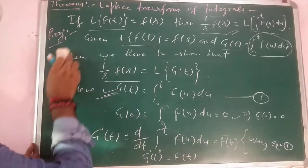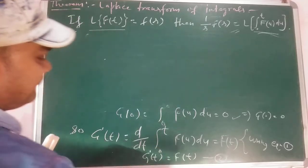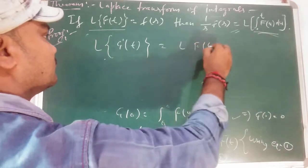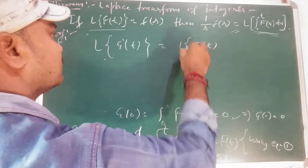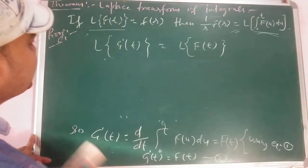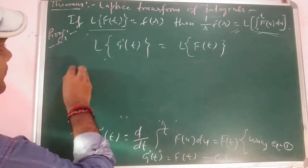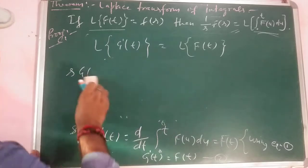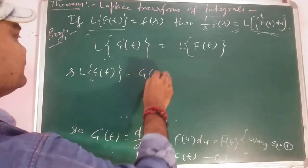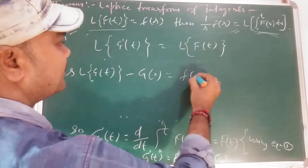Now we will take Laplace of both sides. Taking Laplace of both sides of equation 2: we know from the derivatives theorem that L{g'(t)} = s·L{g(t)} − g(0), which equals F(s). This formula is from the theorem on Laplace of derivatives.